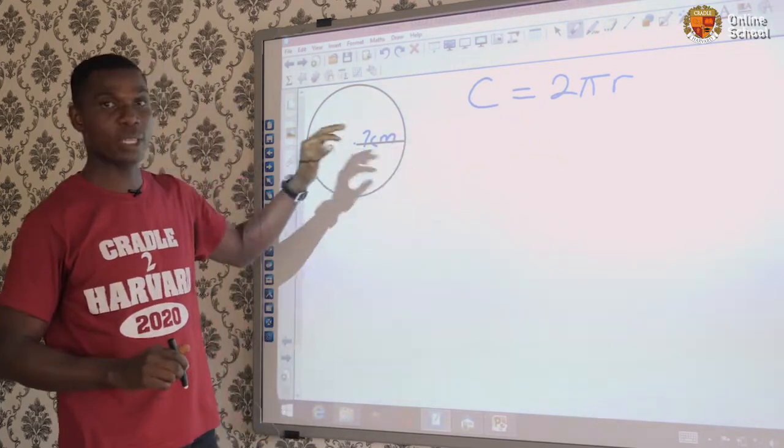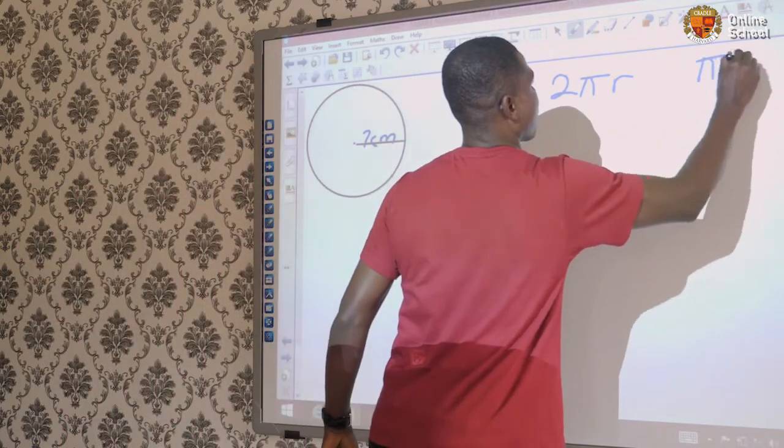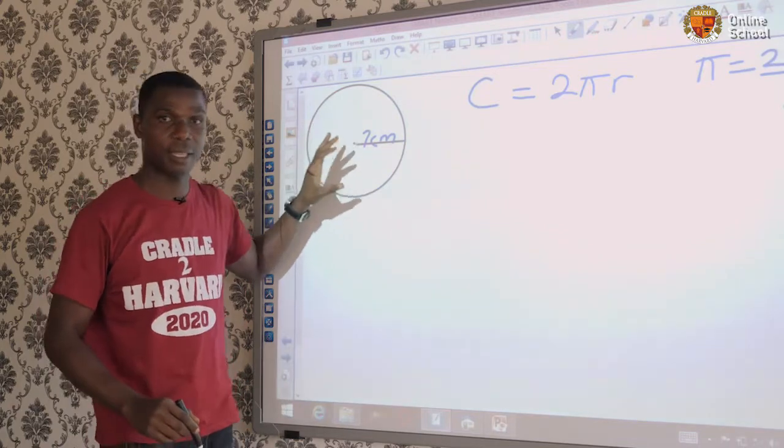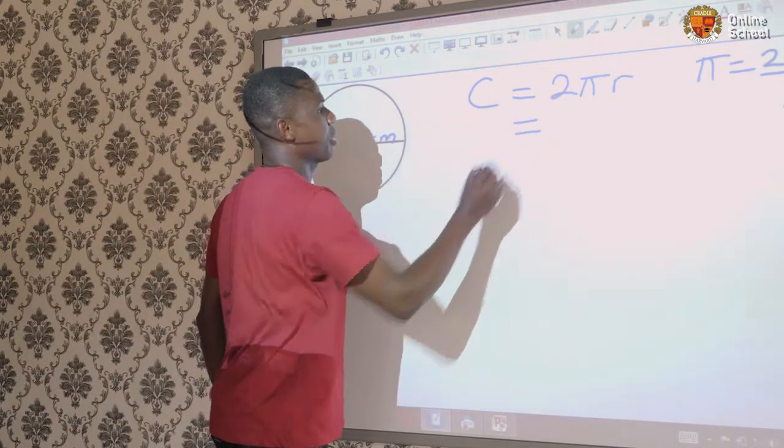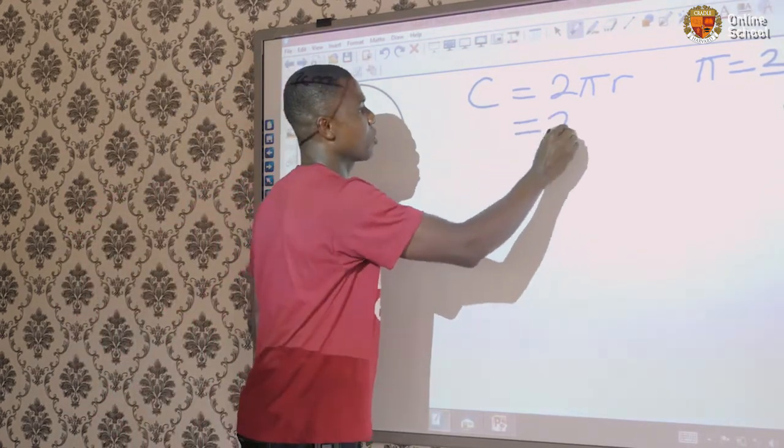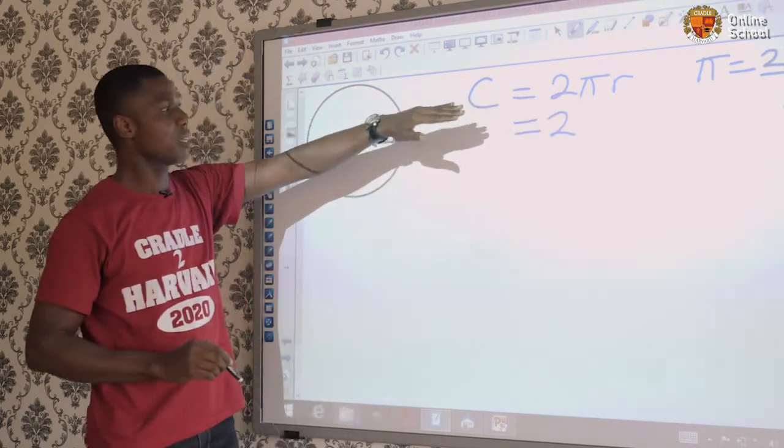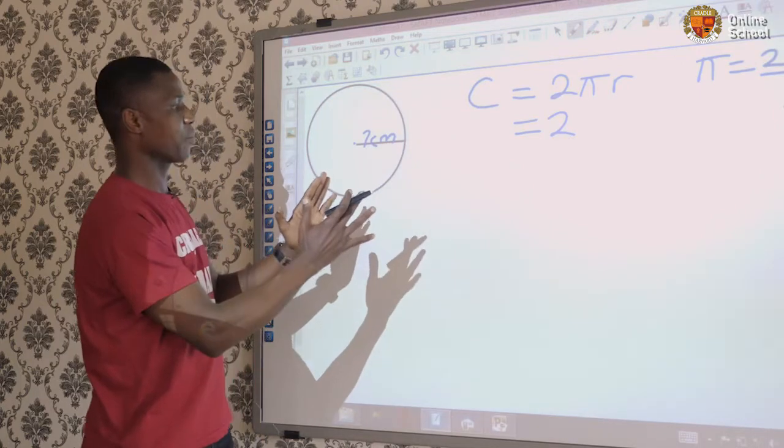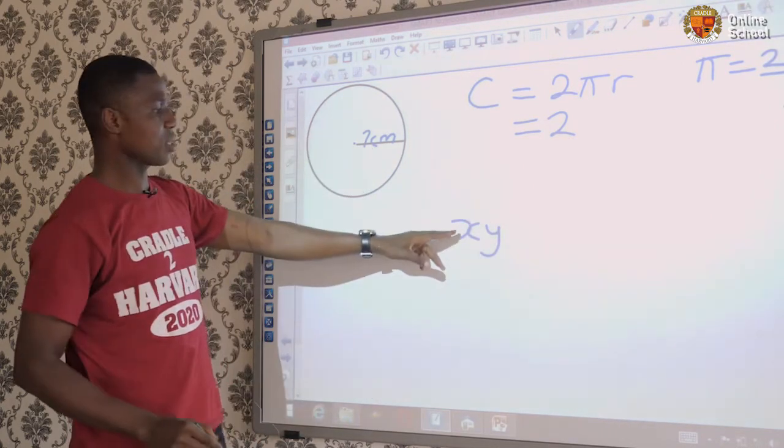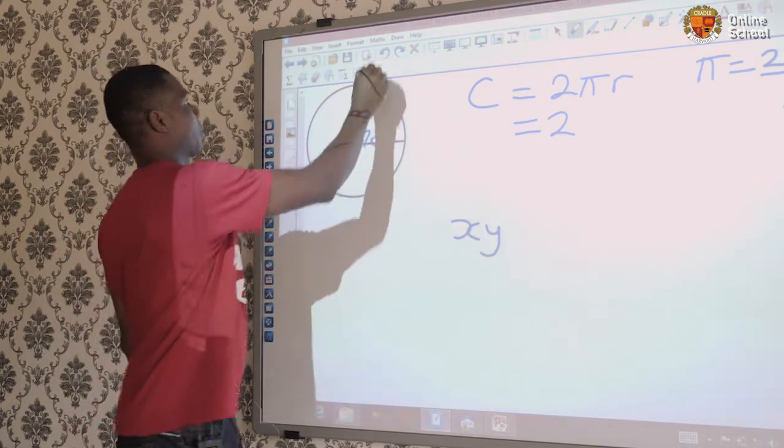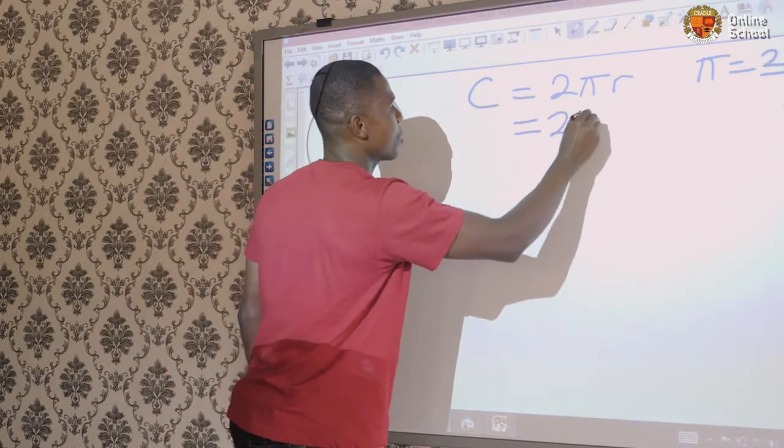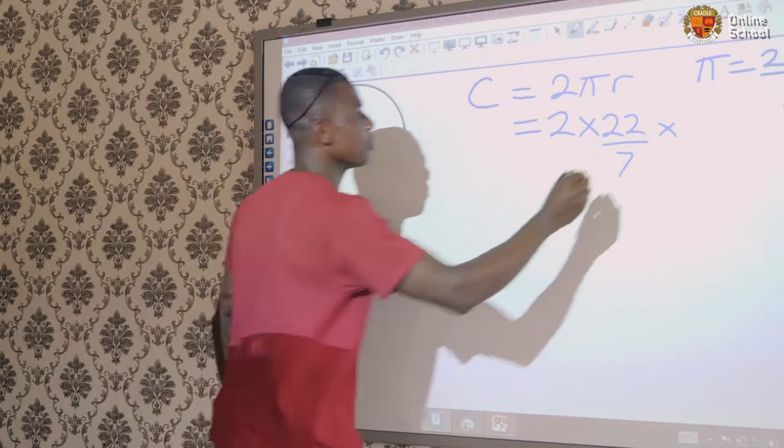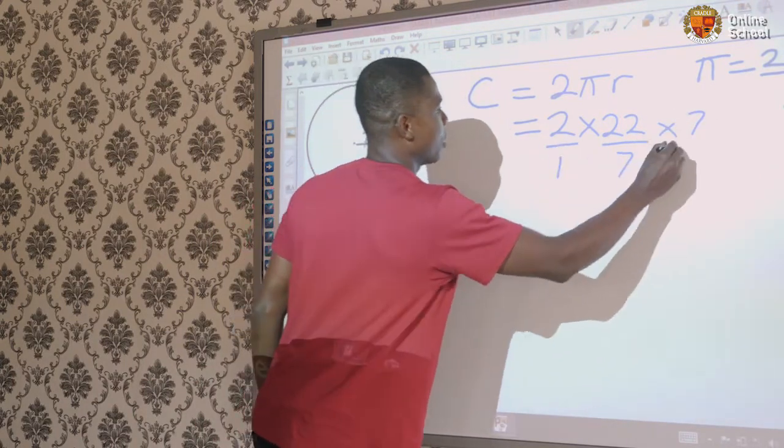We are going to be taking pi as 22 over 7. This is the constant that we are going to be adopting for pi. You take it gradually and carefully. This is your 2 times. As these numbers are written closely like this, it simply means 2 times pi times r. Whenever numbers are close, for instance, this is x times y. You can put over 1.